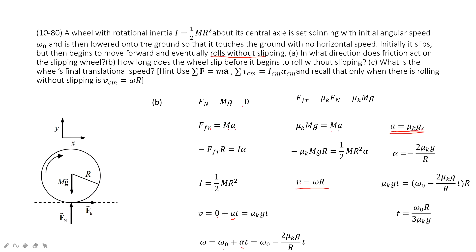So acceleration equals μ_k g. Now we consider angular acceleration. We use net torque equals I times alpha.